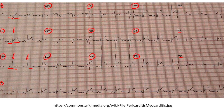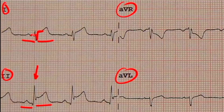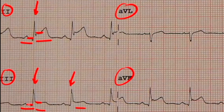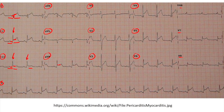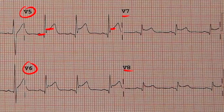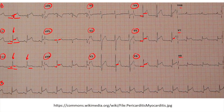In pericarditis, the ST segment plateau is elevated above the PR interval across nearly all leads — leads one, two, three, AVF, V5, V6, V3, and others. This global ST segment elevation is very indicative of pericardial inflammation. It's critical to distinguish this from a myocardial infarction, where only one portion of the heart is inflamed because only one or two vessels are occluded. In an MI, ST elevation appears only in the leads corresponding to the affected region.